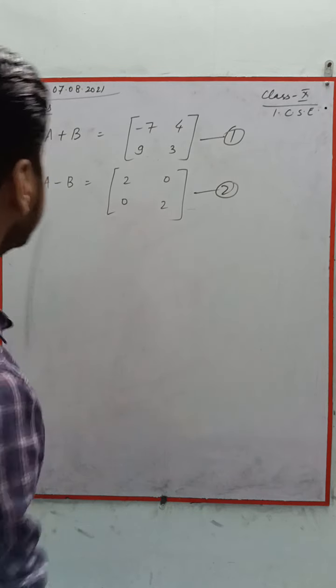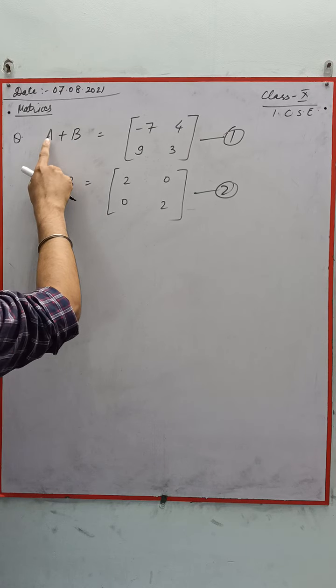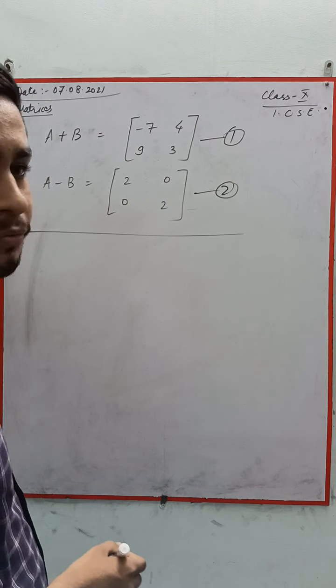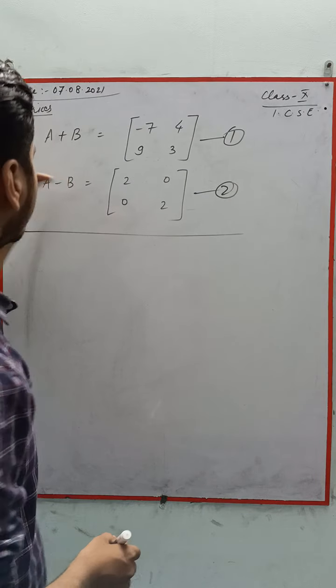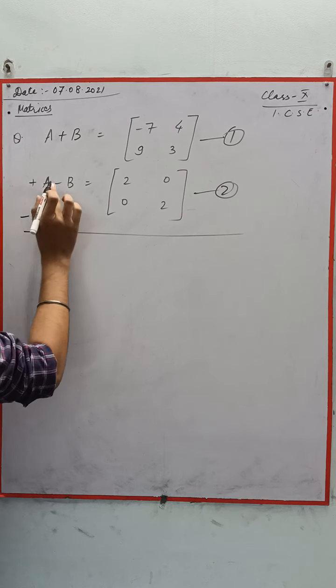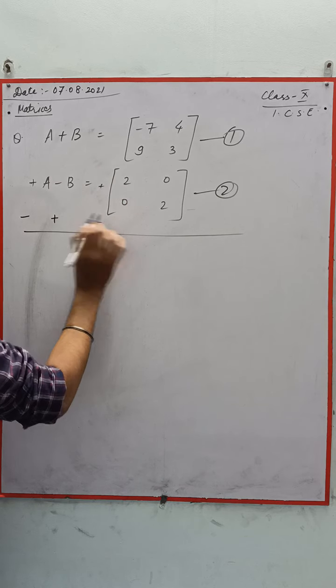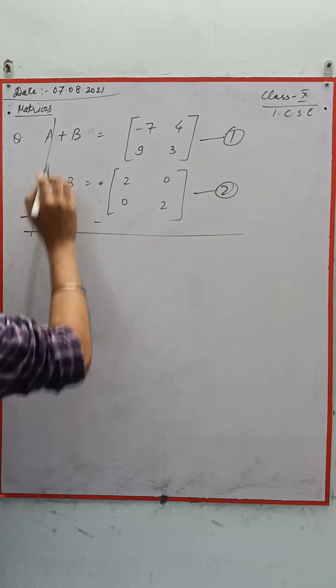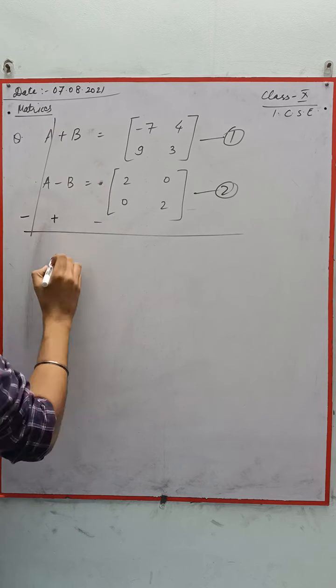Can we see these as linear equations? They are in two variables, that is A and B. So let us use the elimination method. In the solution, you have to write properly: using elimination method. Here it will be minus because plus, so minus. Here minus plus, and this is a positive matrix so minus. A minus A will be cancelled. Plus B plus B, you will get 2B. You need to subtract these two matrices: minus 7 minus 2 gives minus 9.